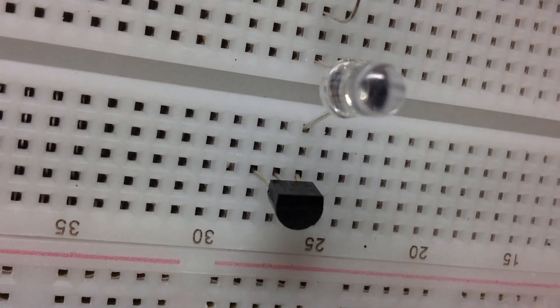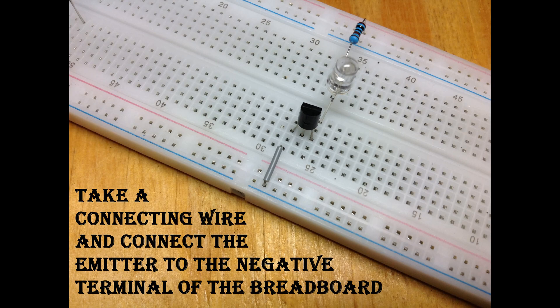Take a wire and connect the emitter of the transistor to the negative terminal of the breadboard.